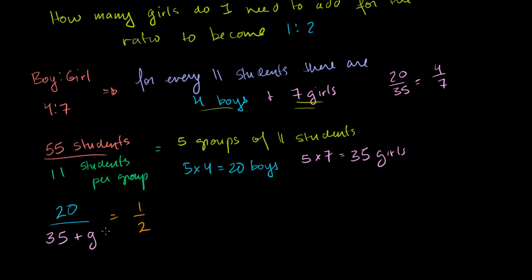If you want to do it algebraically, you could cross multiply. So you get 35 plus g is equal to 2 times 20, which equals 40. So if you subtract 35 from both sides, you get g is equal to 5.